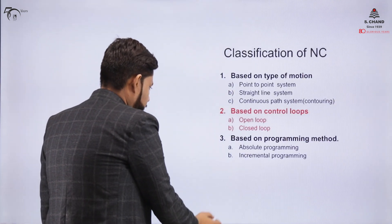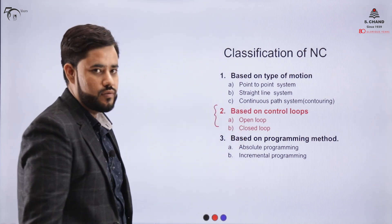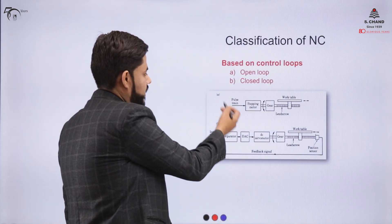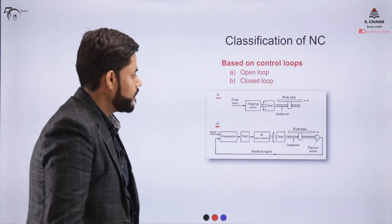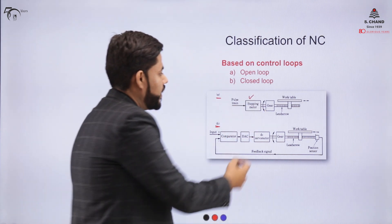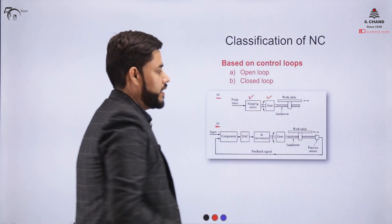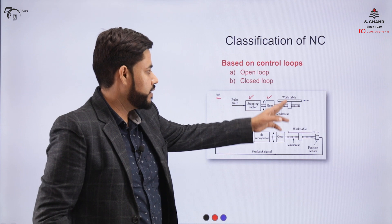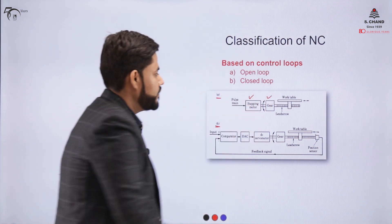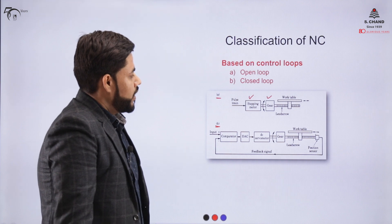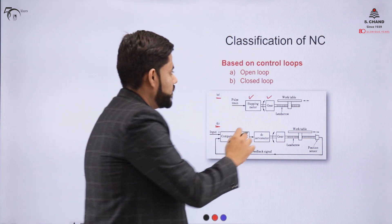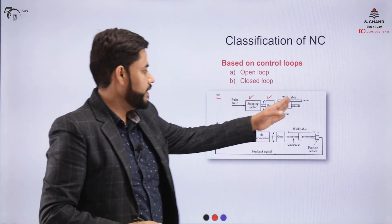The second classification covers the open loop and closed loop systems. In the open loop system, pulses are supplied to a stepper motor which drives a gear, and the rotary motion is converted into linear motion via lead screws. However, the system cannot determine the position of the workpiece — there is no feedback from the system, so it is called an open loop system.